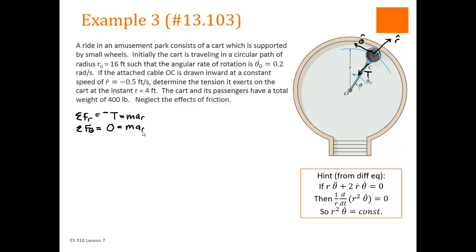Is equal to mass times acceleration in the theta direction. Now think back and remember what the expressions for a_r and a_theta were. And we get this is mass times r double dot minus r theta dot squared. And mass times r theta double dot plus 2r dot theta dot.